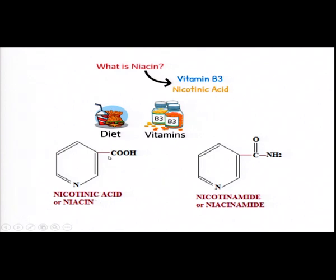Niacin is normally obtained from a well-balanced diet, and those with a deficiency can supplement it from various sources. Nowadays, people are recommended to take niacin regularly when suffering from certain conditions. Pellagra, a well-known established disease of niacin deficiency, can be reversed when niacin is supplied on a regular basis.